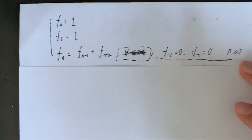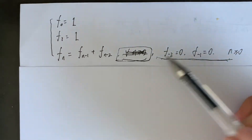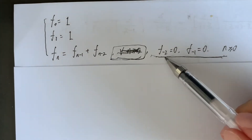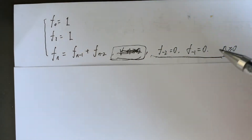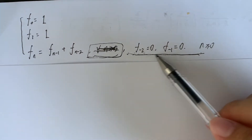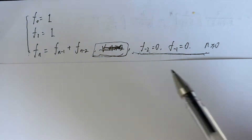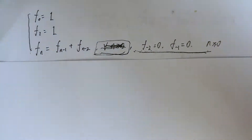The boundary condition form is inconvenient. To change this situation, we further suppose that F(-2) and F(-1) both equal 0. So after we apply this, the recurrence equation can be used for all n greater than or equal to 0.